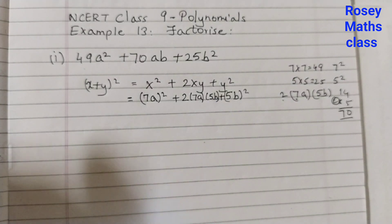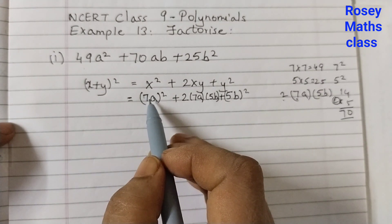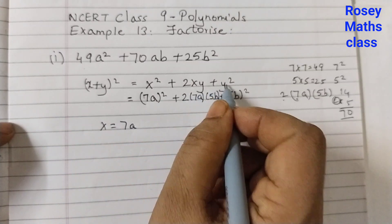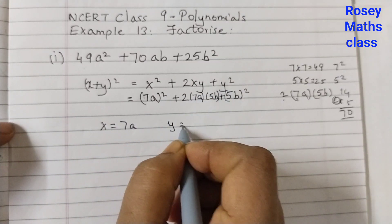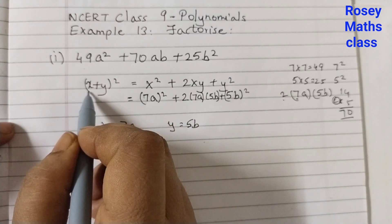So all we are doing is we are just comparing this. x is 7a, y is 5b. So now we can write this in this form.